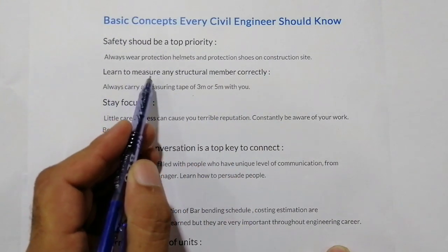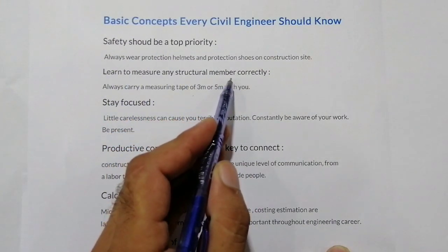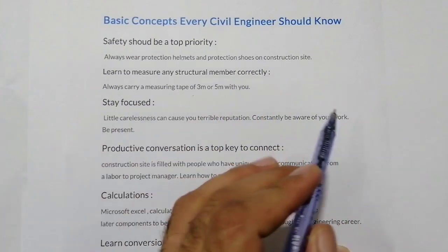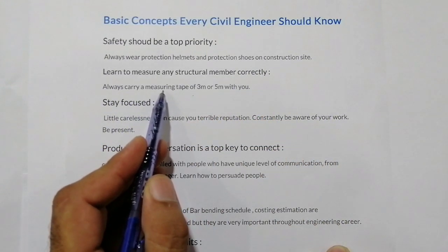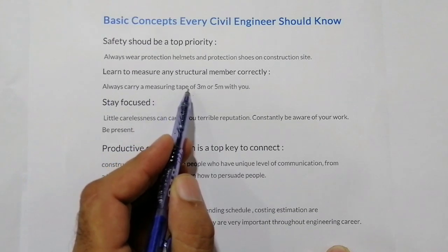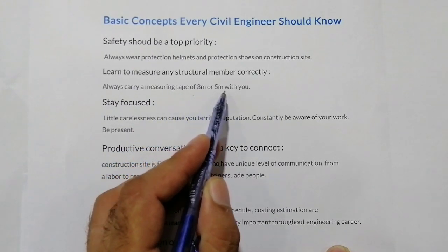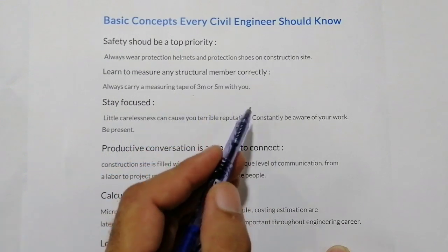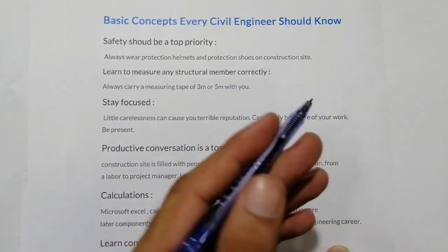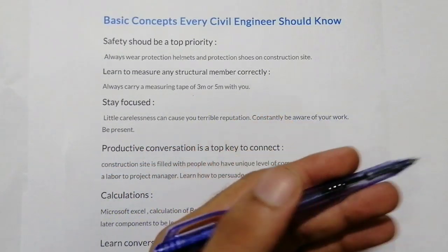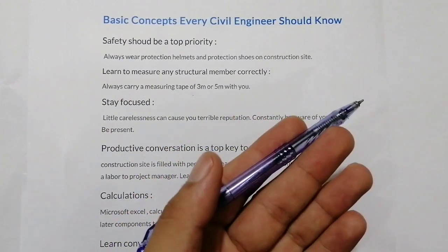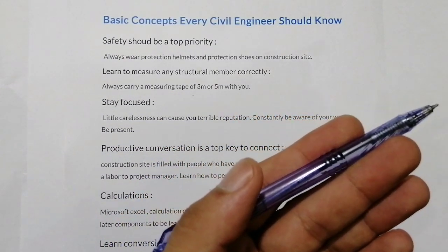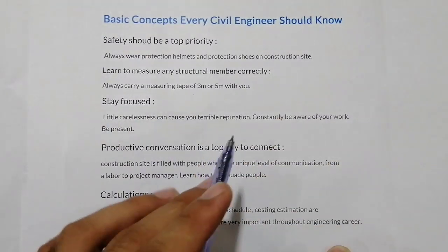The second concept is to learn how to measure any structural member correctly. Always carry a measuring tape of 3 meters or 5 meters with you, because with a measuring tape you can measure RCC structures on the construction site — their formwork, for example beam, column, slab thickness, etc.